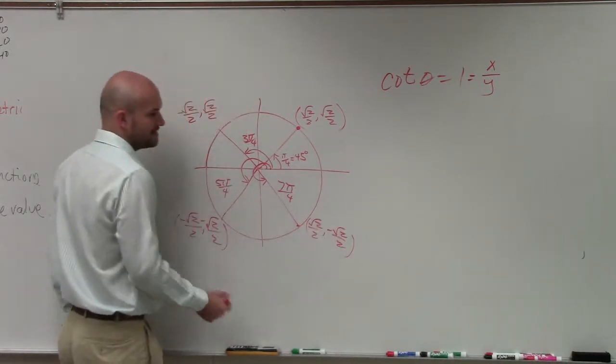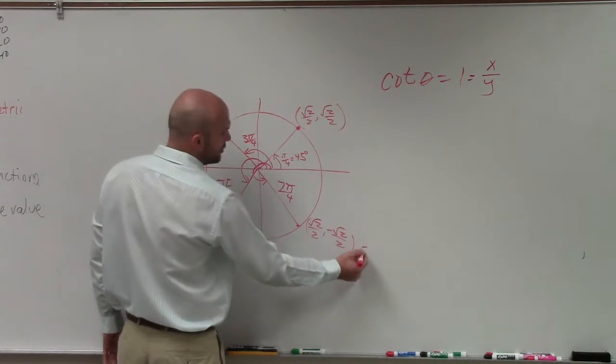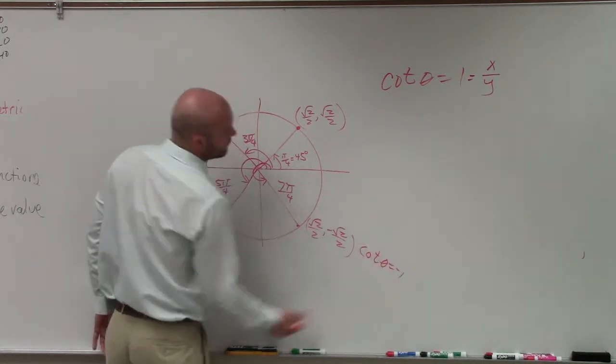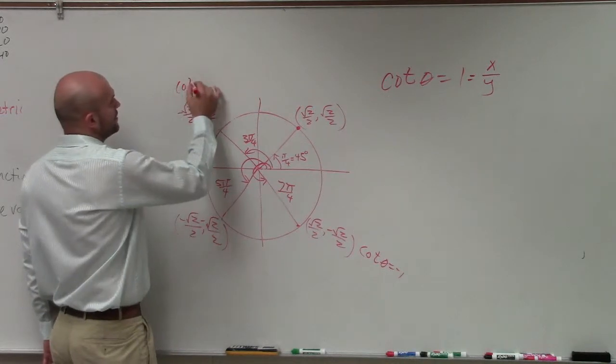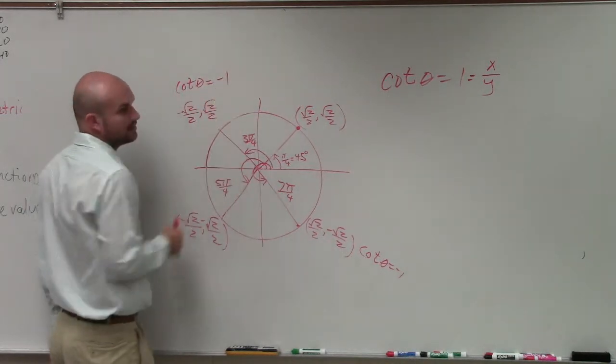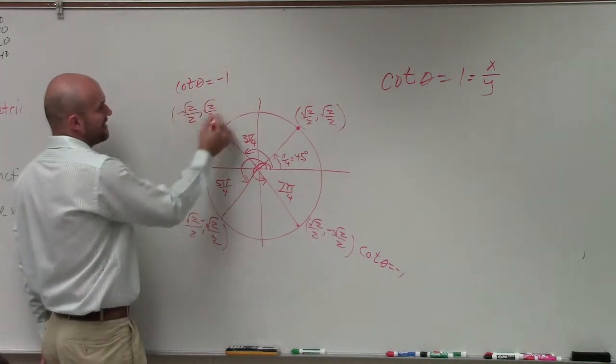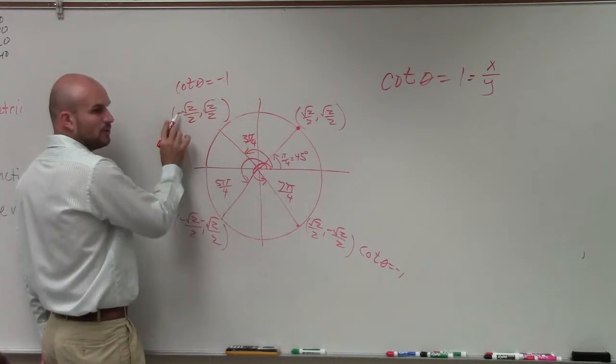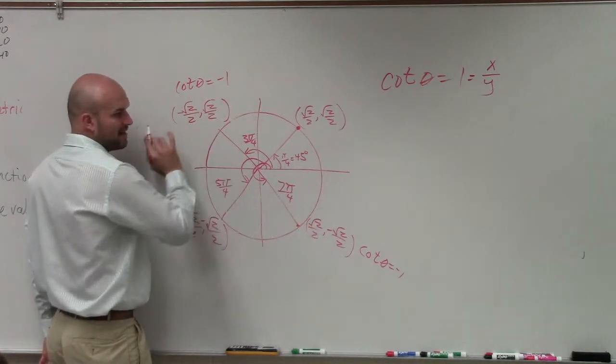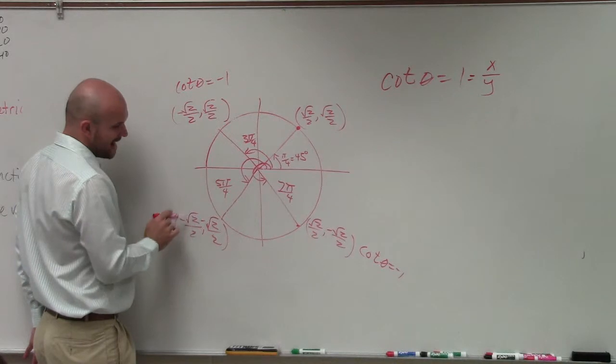Now, what you notice is here, if I did my cotangent of theta, that would equal negative 1, right? Here, cotangent of theta would equal negative 1, because if I did my x over my y, one of them's negative and the other's positive. However, here, I have two negatives.